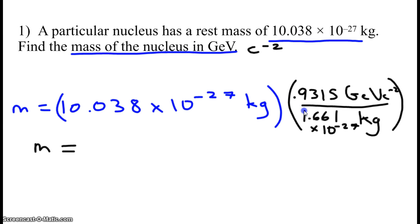The kilograms cancels and the units that you have left over are gigaelectron volts per C squared. So you find your answer.